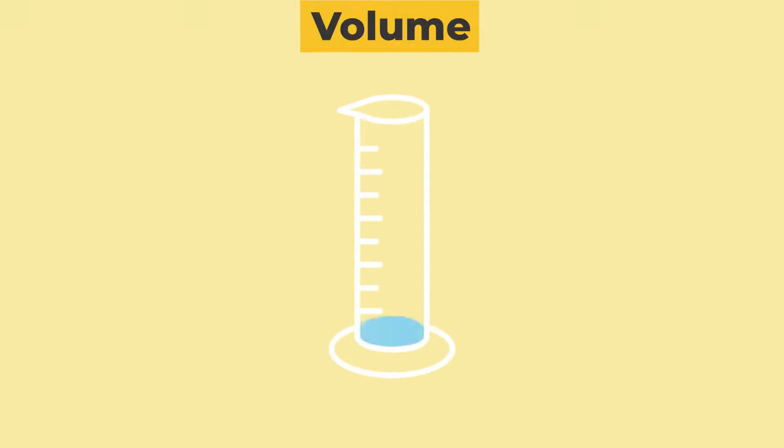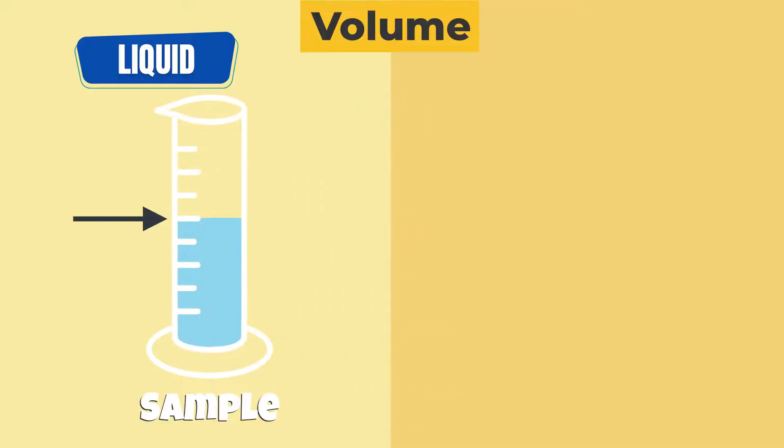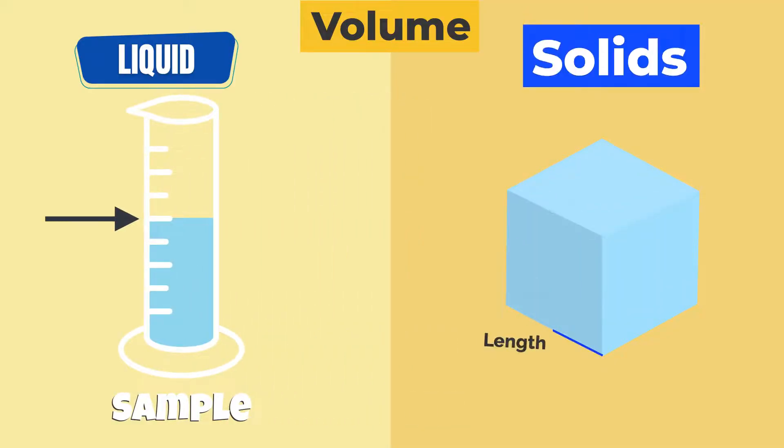Next, use a graduated cylinder to calculate the volume of the sample. If the sample is a solid, multiply its length, width, and height to find the volume using the formula V equals L times W times H.